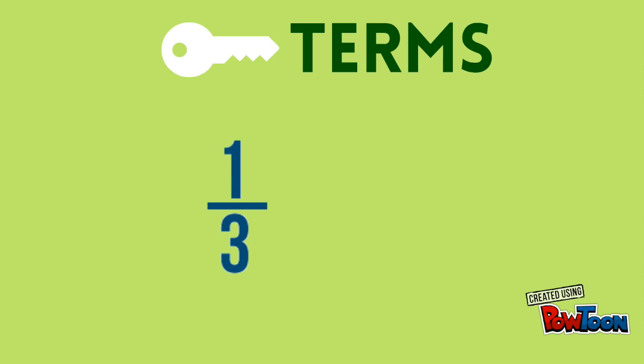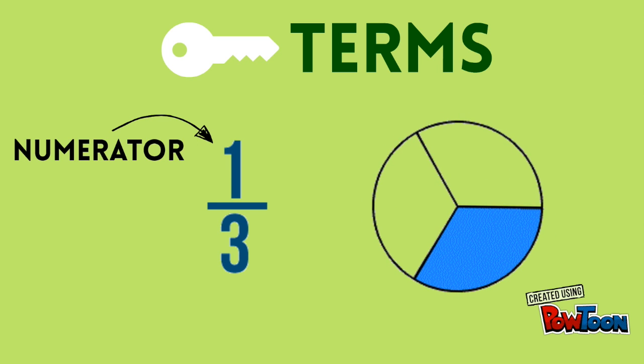Let's get comfortable using the math terms assigned to the two digits found in fractions. The top number is the numerator. The numerator is the number part. It tells you how many. Let's look at this figure for example. How many parts are shaded? One part. See, the numerator names the number of parts.